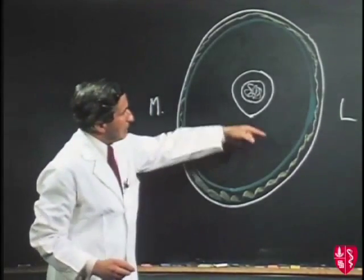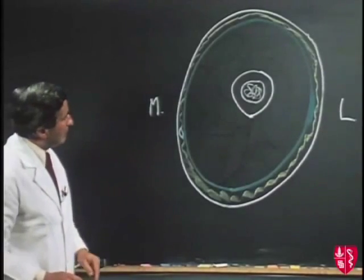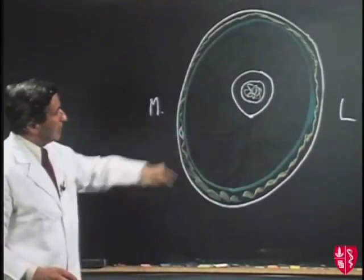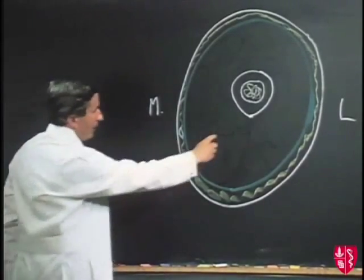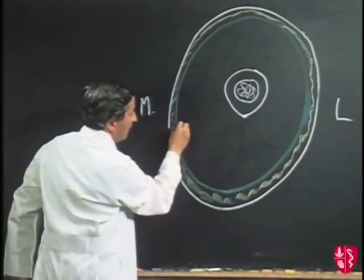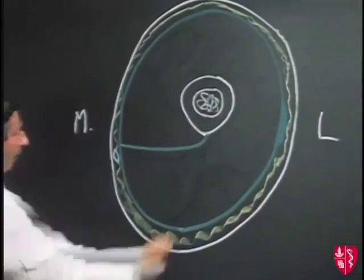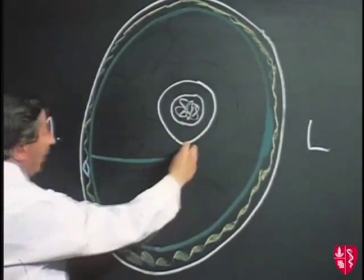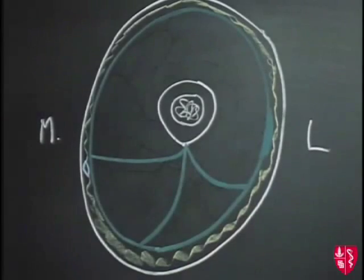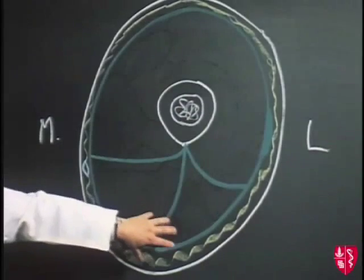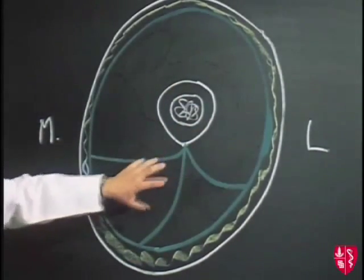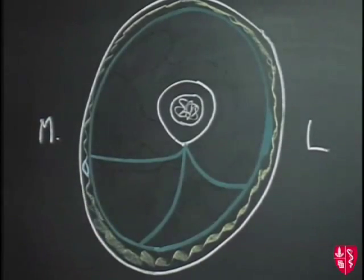The thigh is divided into three compartments by fascial septa, which run from the inner surface of the deep fascia towards the linea aspera. We have a septum passing in here, another one passing out here, and a third septum passing out in that direction. Each of these compartments between the septa has groups of muscles, each of which have their own nerve supply and blood supply.